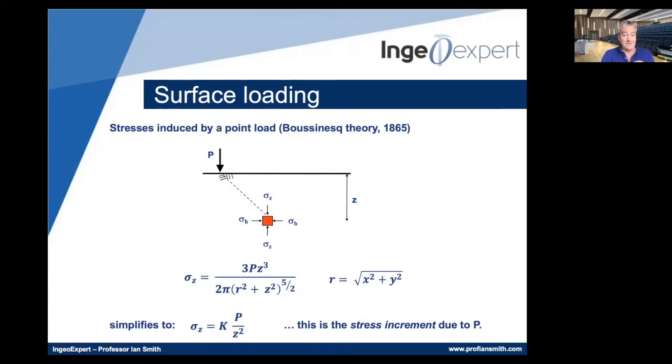So R is the radial distance. It's from Pythagoras, it's equal to the square root of X squared plus Y squared. X is the distance that P is away from above the point of interest in one direction and Y is in and out the screen direction.